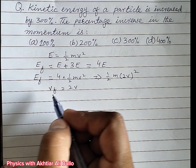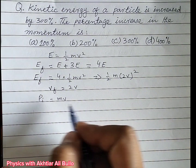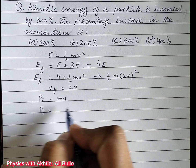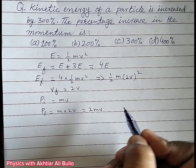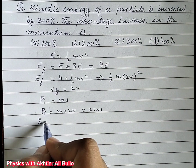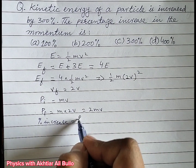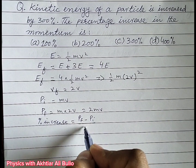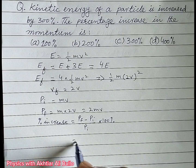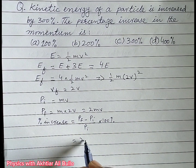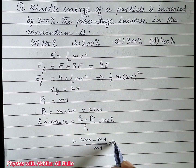So initial momentum is Mv, and final momentum will be M × 2V, which we can write as 2Mv. The percentage increase equals (final momentum − initial momentum) / initial momentum × 100%, which is (2Mv − Mv) / Mv × 100%.